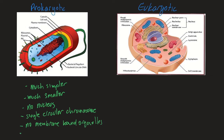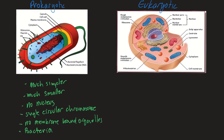Prokaryotes are known to us as bacteria. They are the first cells and the most abundant cells in the whole world — meaning there are more of them than any other cell. They're everywhere, and prokaryotes always exist as single-celled organisms.